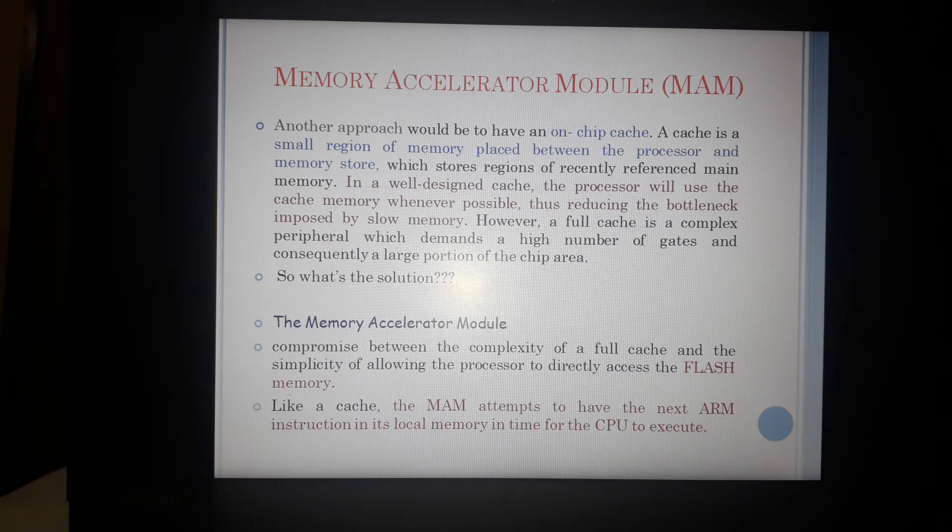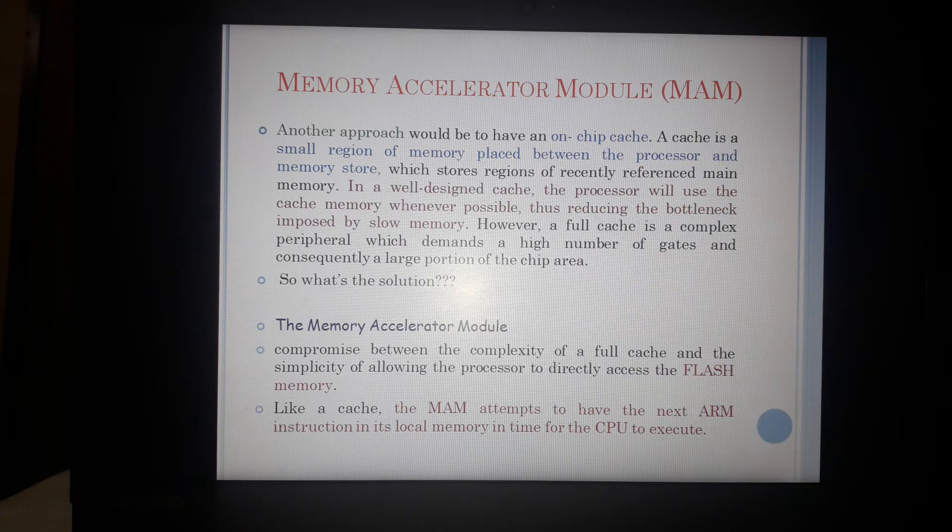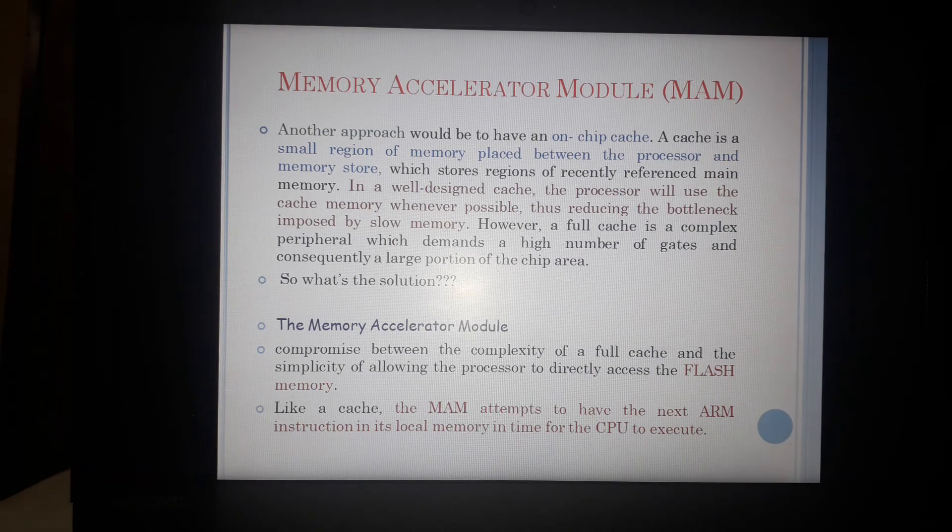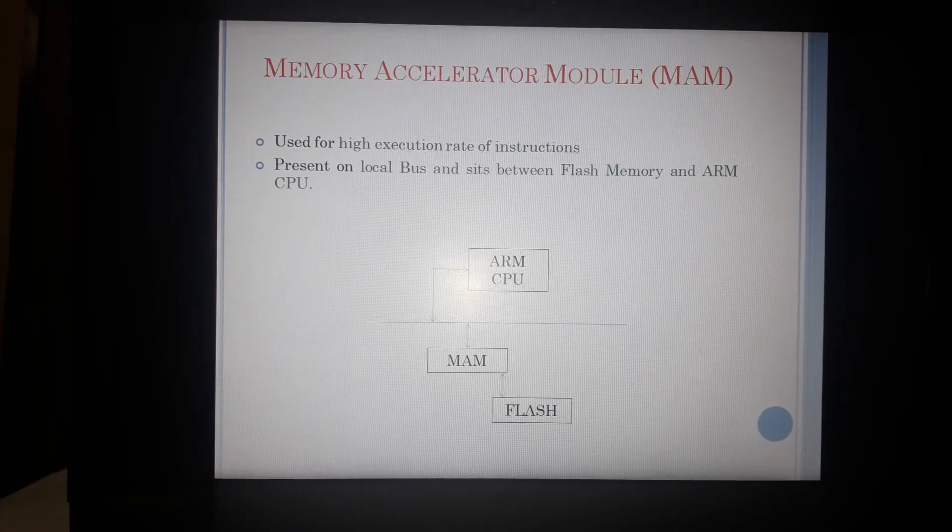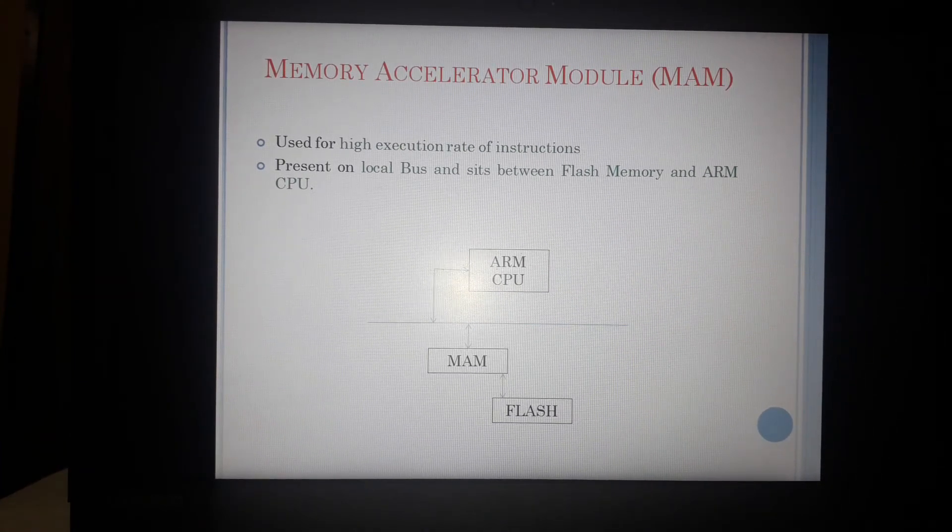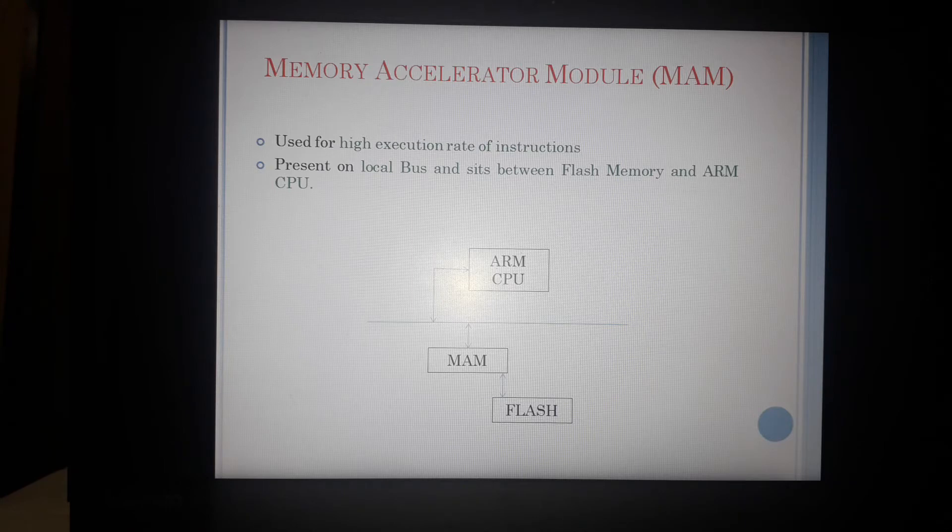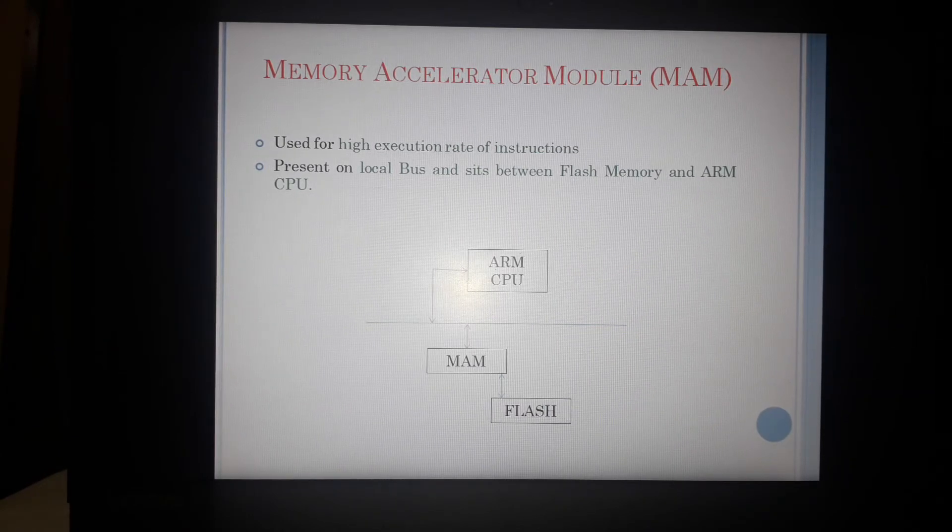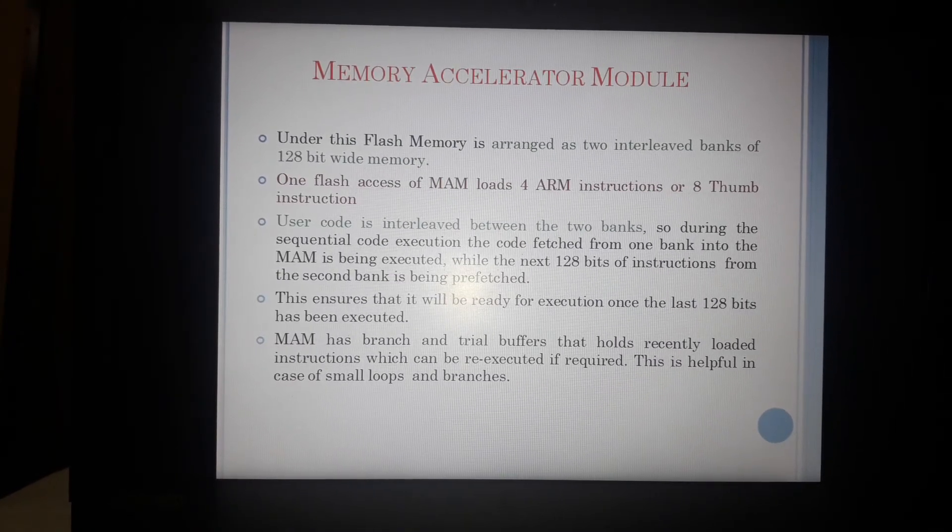So what then? The solution here comes in the form of memory accelerator module which compromises between the complexity of a full cache and the simplicity of the simple flash access or the simple memory access. How does it work? So basically memory accelerator module is sitting between the processor and between the flash memory and it connects to the local bus to the CPU. So again, the limitation of the bus speed is going to be there. So how does it help in faster access?